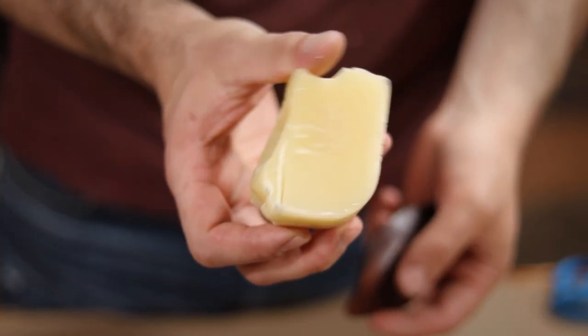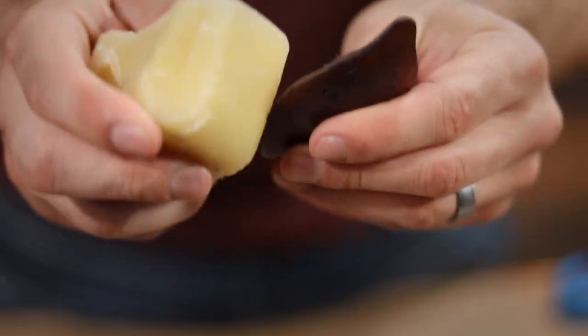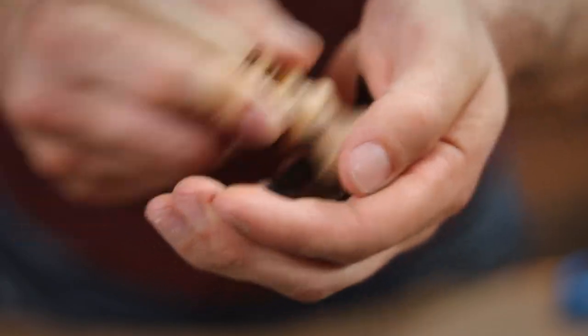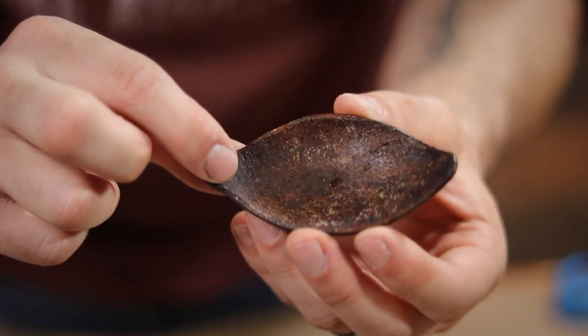Next, I busted out this block of beeswax to burnish the edges, as well as to finish off the back. This leaves a nice smooth edge and lays down the nap on the back side of the leather, leaving a shiny finish.